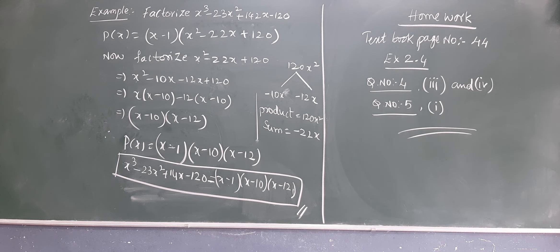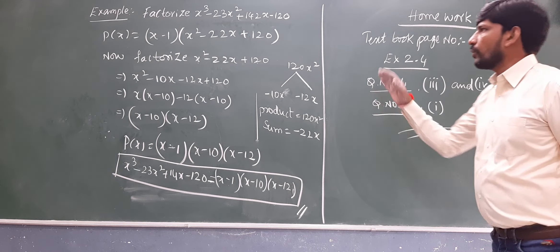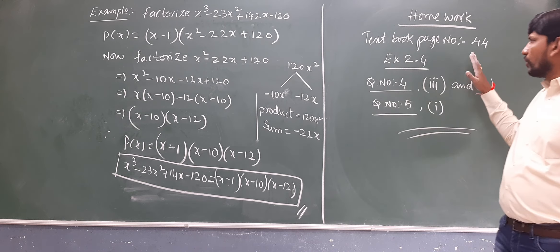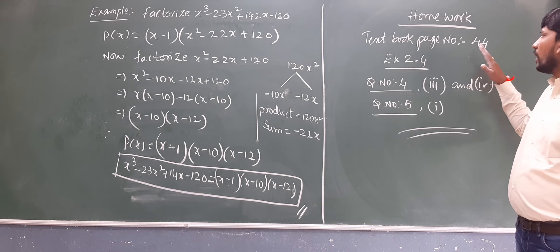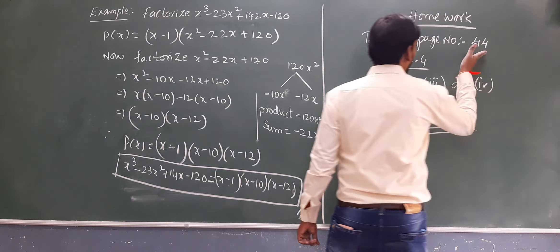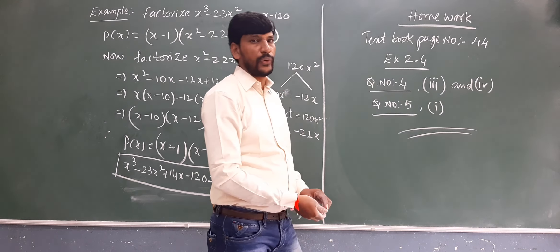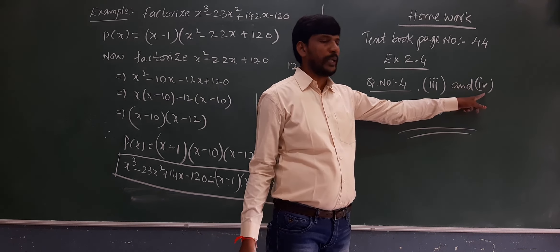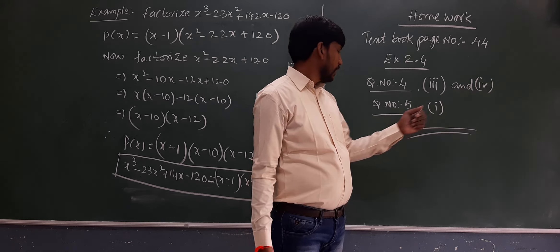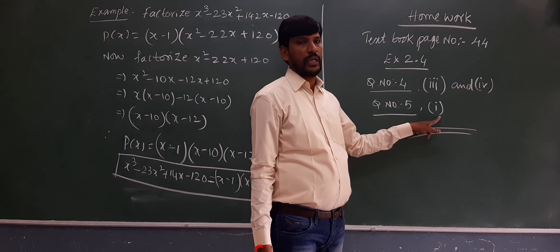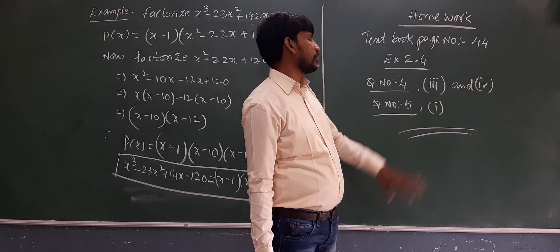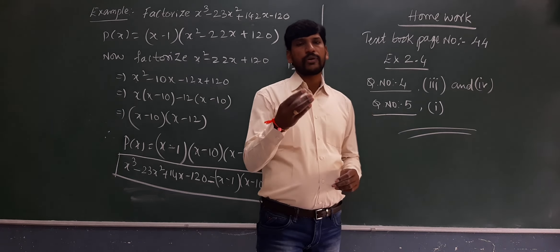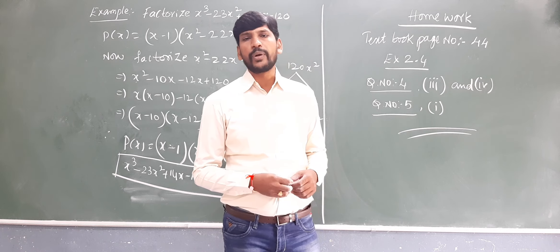Right children, I hope you understood how to factorize a cubic polynomial. Here is your homework: textbook page number 44, exercise 2.4, question number 4 third and fourth bit, and question number 5 first question. Please complete this homework and send it to my WhatsApp number in your group.